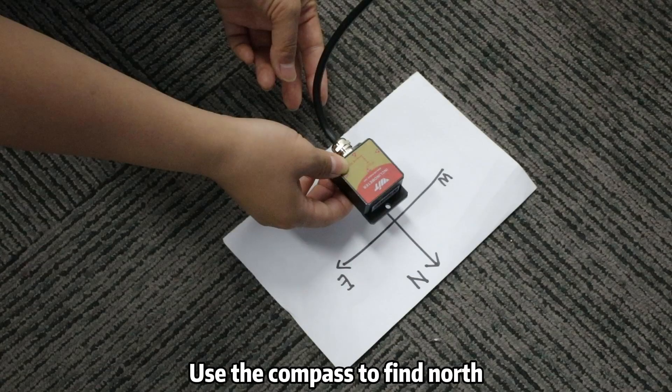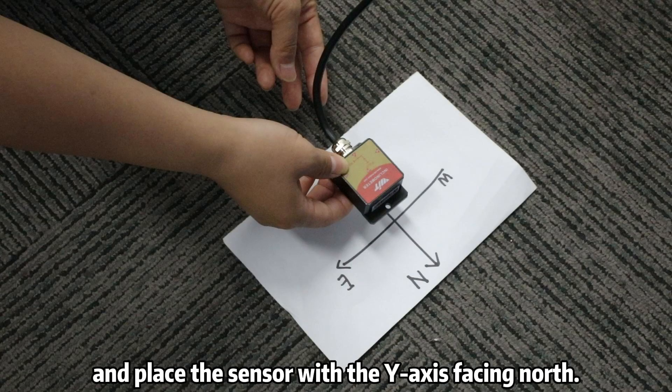Step 2: Use the compass to find north and place the sensor with the y-axis facing north.